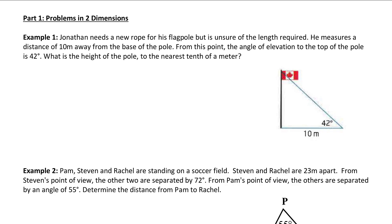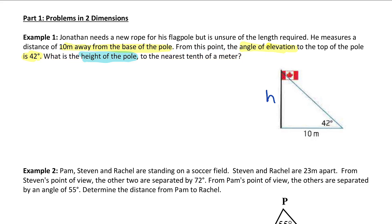Example one: Jonathan needs a new rope for his flagpole but is unsure of the length required. He measures 10 meters away from the base of the pole, and from this point the angle of elevation to the top of the pole is 42 degrees. We need to find the height of the pole. Assuming the flagpole is perpendicular to the ground, we have a right angle triangle and can use SOHCAHTOA.